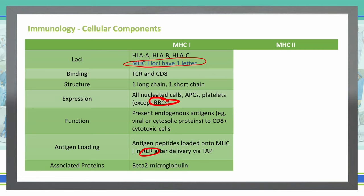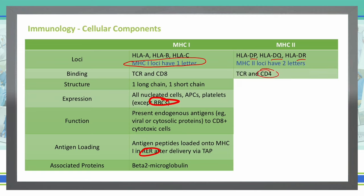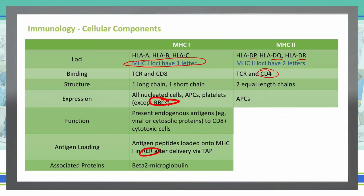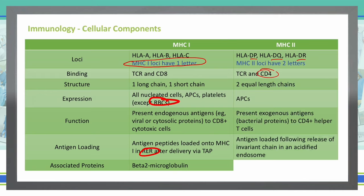Now let's compare this to MHC2. With MHC2, the loci have two letters — HLA-DP, HLA-DQ, and HLA-DR. The binding site for these are the TCR and CD4. The structure of the MHC2 compound is two equal-length chains. It is expressed on APCs, and its function is to present exogenous antigens — such as bacterial proteins outside the body — to the CD4 helper T cells. Antigen loading occurs following the release of invariant chains in an acidified endosome, and the associated protein is the invariant chain.